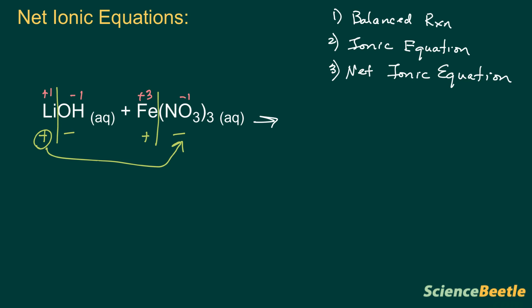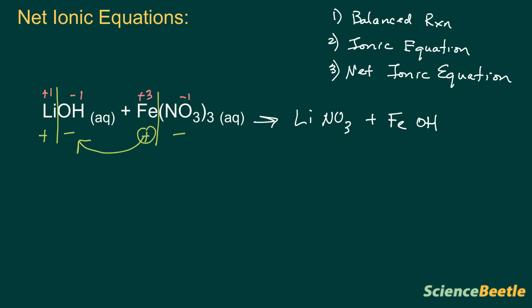So the reaction will proceed with lithium displacing the iron and combining with the nitrate. We'll see that it's going to be lithium combining with nitrate — I'm not going to transfer any subscripts at this point — and then the other product is going to be iron combining with the hydroxide that's been left over. We don't have charges on the right side yet, so transfer all the charges: plus one for lithium, nitrate is minus one, iron is plus three, and hydroxide is minus one.